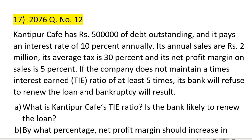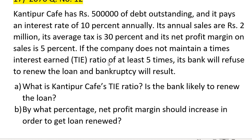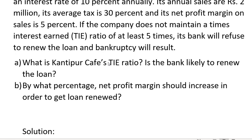Kanthipur Cafe has Rs. 50,000 of debt outstanding and it pays an interest rate of 10% annually. Its annual sales are Rs. 2 million. Its tax rate is 30% and its net profit margin on sales is 5%. If the company doesn't maintain a times interest earned ratio of at least 5%, its bank will refuse to renew the loan and bankruptcy will result.